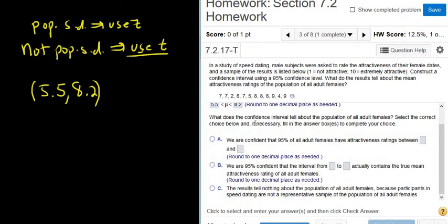Okay, it says, what does the confidence interval tell about the population of all adult females? Well, it doesn't say anything about the population of all adult females. See,